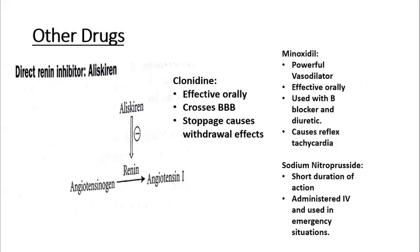Some other noteworthy drugs: the direct renin inhibitor aliskiren directly inhibits renin so angiotensin-1 and angiotensin-2 are not formed, and blood pressure does not increase. Clonidine is effective orally and crosses the blood-brain barrier, but causes withdrawal effects on stoppage. Minoxidil is a powerful vasodilator used with a beta blocker and diuretic, and it causes reflex tachycardia. Sodium nitroprusside has a short duration of action and is used in emergency cases, administered in IV form.